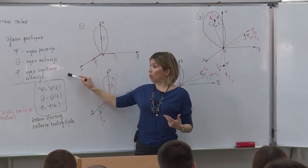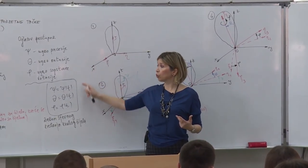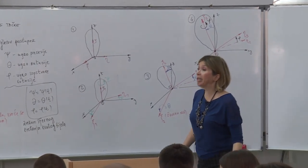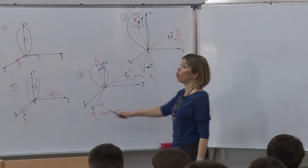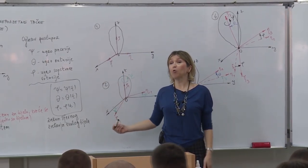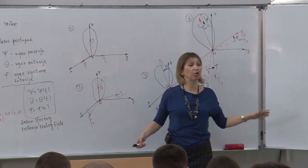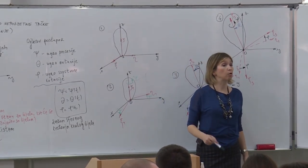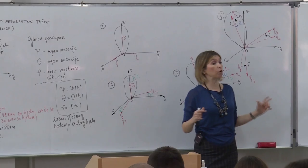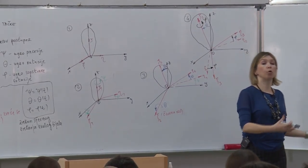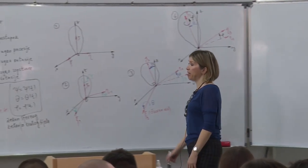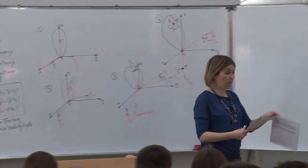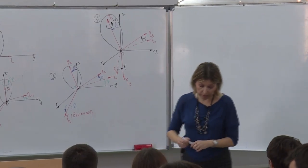Dakle, tri rotaciona stepena slobode. Interpretirali smo sferno kretanje krutog tijela na osnovu tri Eulerova ugla, uz konstataciju da ukoliko su uglovi poznate funkcije vremena, onda je potpuno definisan položaj tijela u svakom trenutku. Ovi uglovi će biti veličine iz kojih dalje izvodimo kinematske karakteristike: deriviranjem uglova definisat ćemo ugalnu brzinu i ugalno ubrzanje sfernog kretanja.